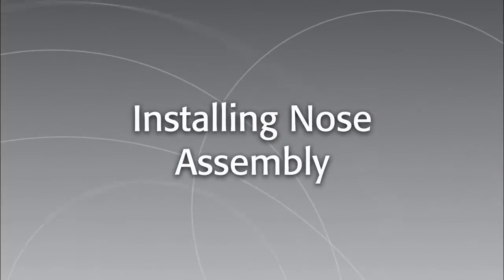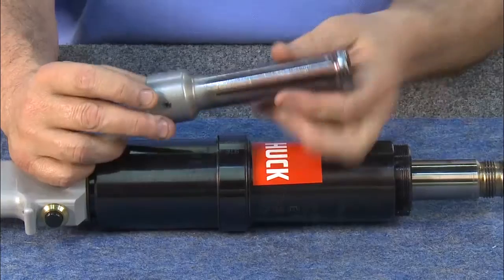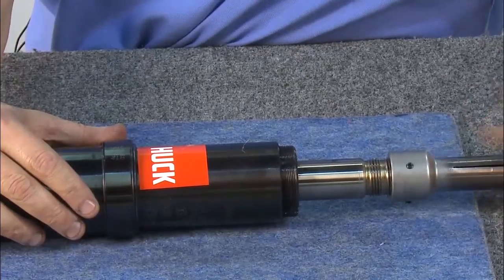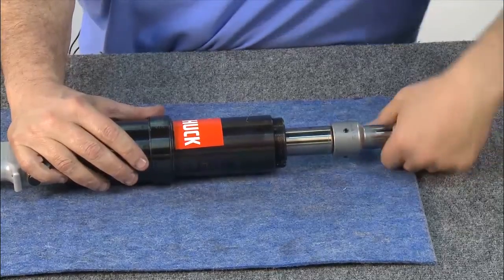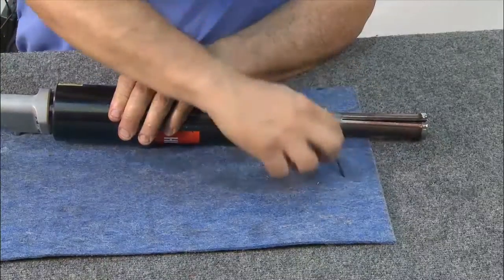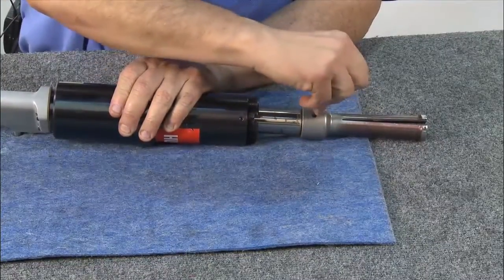To install the nose for bobtail installation, thread the bobtail puller onto the piston until it bottoms out, then lock it in place with three lock screws. Tighten the lock screws in place with an allen wrench.